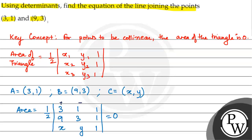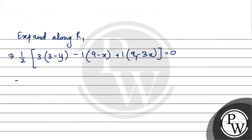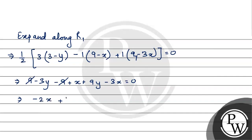Because this term is plus, this is minus, this is plus. So now we solve: this gives 9 minus 3y minus 9 plus x plus 9y minus 3x equals 0. The 9 and minus 9 cancel. The remaining terms give minus 2x plus 6y equals 0.